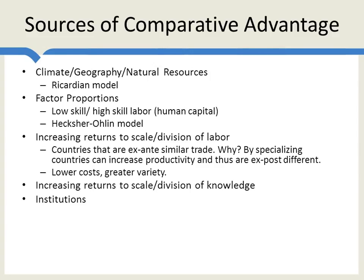Institutions can also generate comparative advantage. Some countries have more labor market flexibility than others. Countries with a lot of flexibility, where they can take workers from one area of the economy and move them quickly into another, tend to specialize more in high-value products for which there's a lot of variability in demand. Another example is finance — some countries have better banking structures. If you're going to need a lot of finance, you want to be in a country like the United States, where you can easily raise a lot of capital. This gives a big comparative advantage to the United States in production which requires huge amounts of capital.